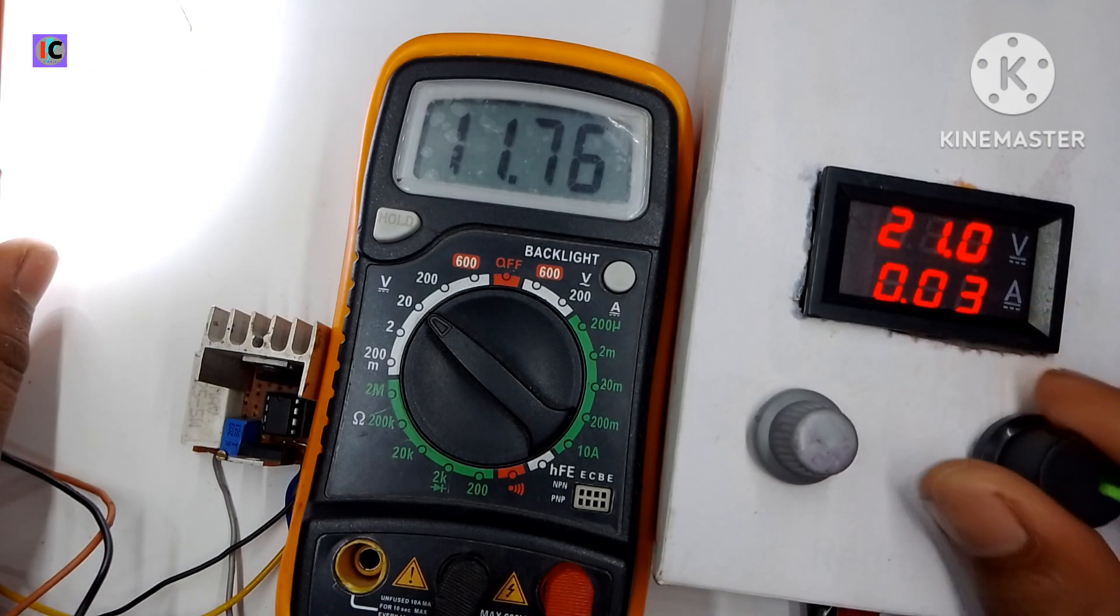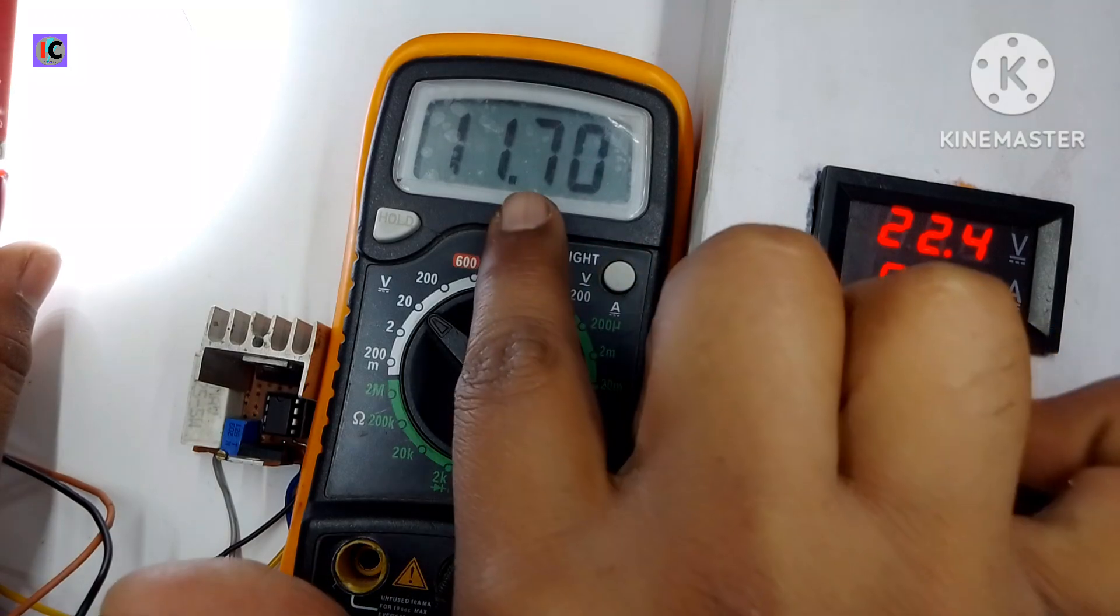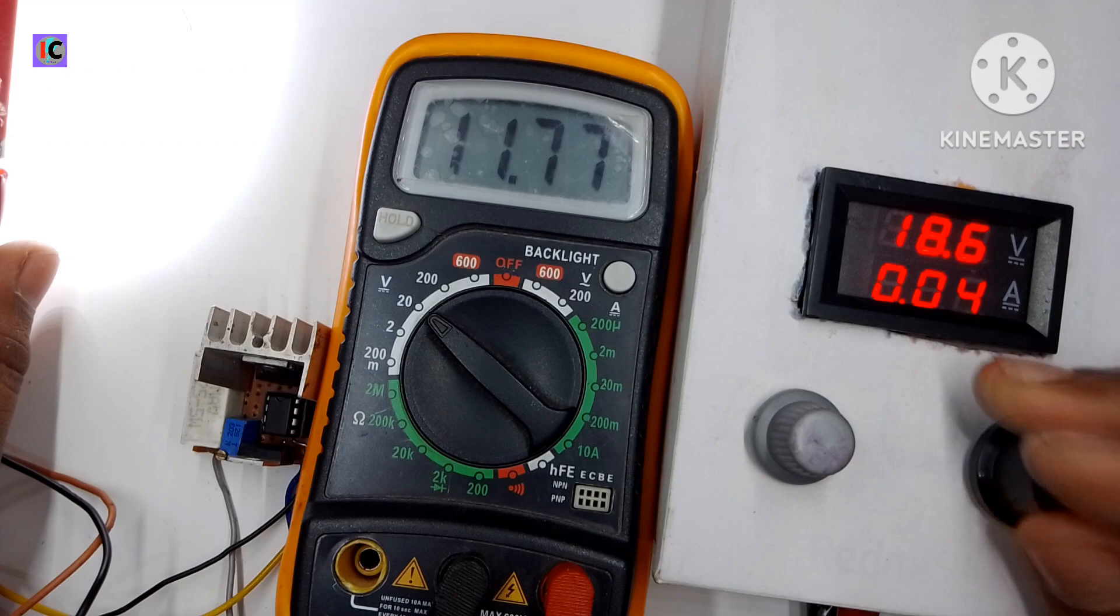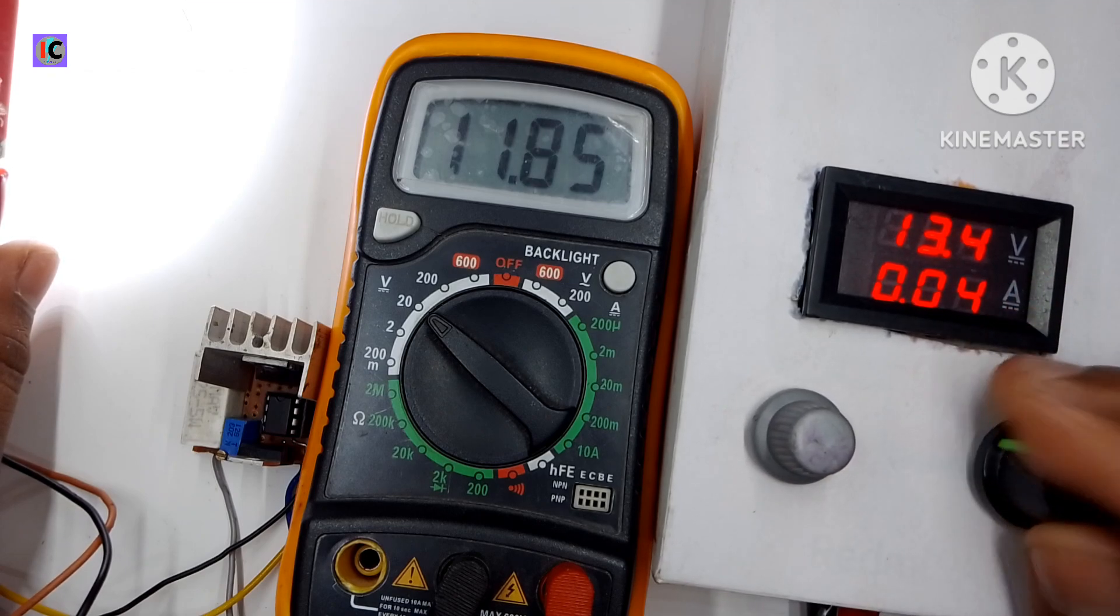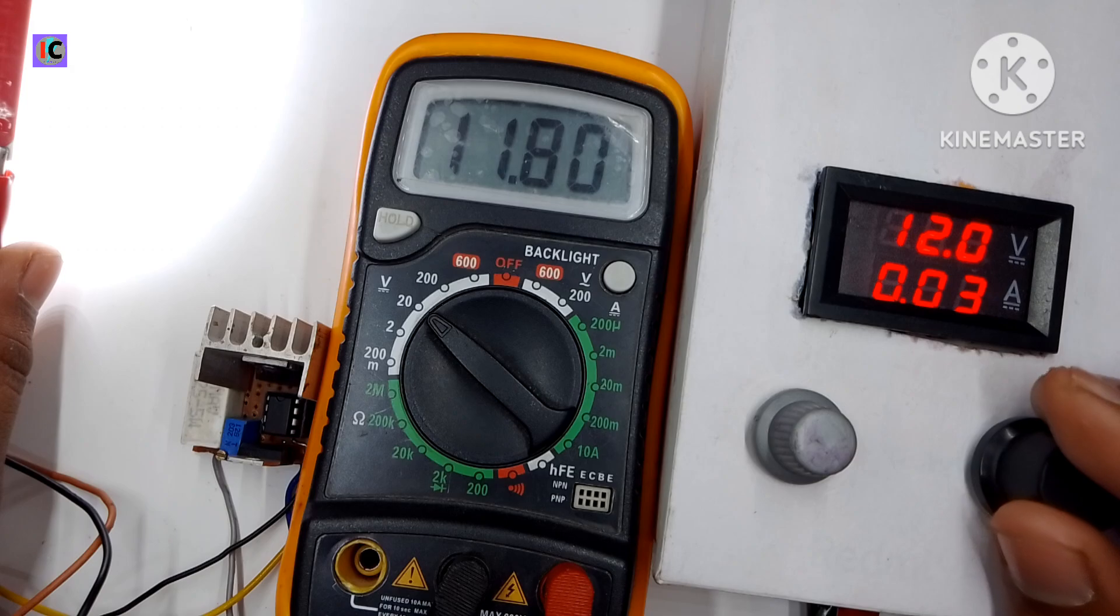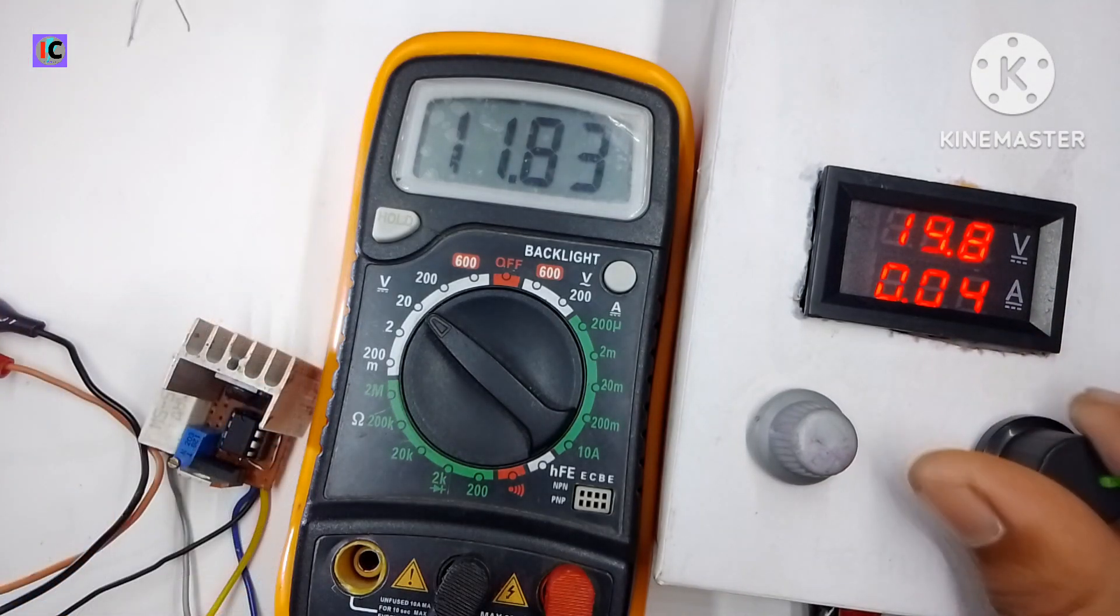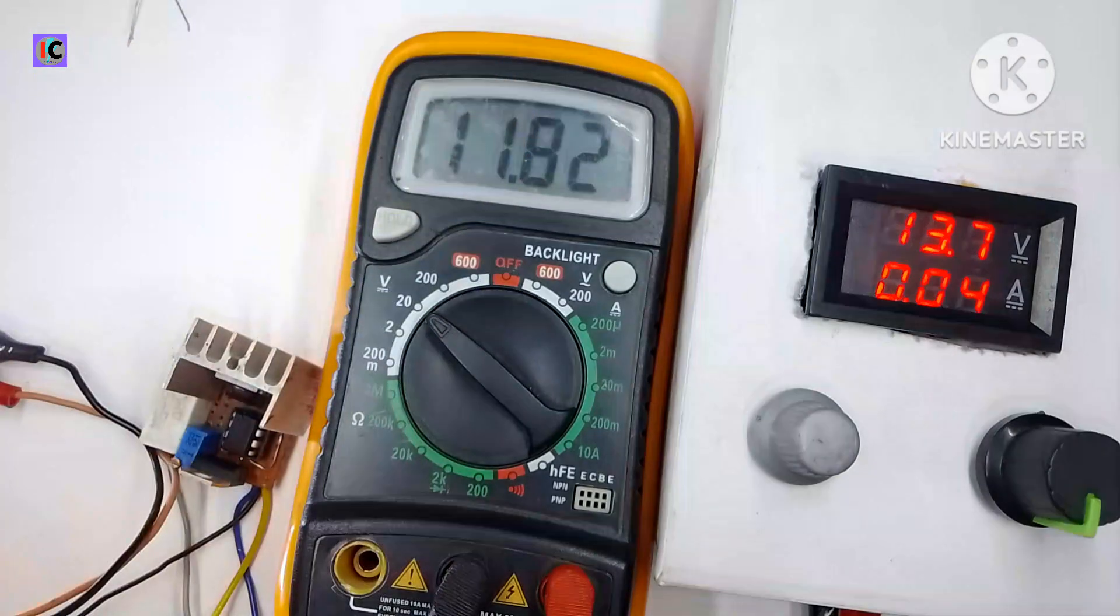Here you can see the circuit is working very well. This circuit can be used for charging lithium batteries also because it features a constant current output. This is today's video. If you like this video please like and share with your friends. The circuit diagram will be in the description. Thanks for watching.